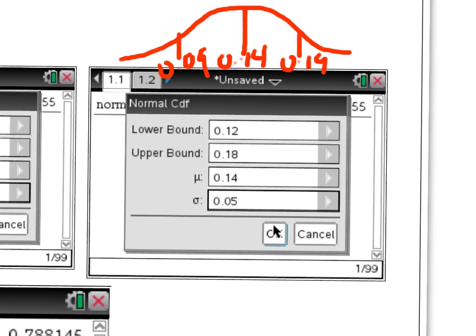Okay, so for this problem, between 0.12 and 0.18, I would need to find, again, that region in my curve. So 0.12 would be about there somewhere, and 0.18 would be about there, and I would shade that region in between. And then I would type this into the normal CDF feature. Lower bound would be 0.12, upper bound would be 0.18, and again, our mean is 0.14, and standard deviation is 0.05.